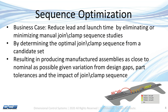We'll do that by determining the optimal sequence of clamping or joining from your candidate set, so that you can produce your assemblies as close to nominal as possible at the beginning of production, given the variation from design gaps and part tolerances. As the seminar goes on, we'll show that the order with which you join or clamp matters.